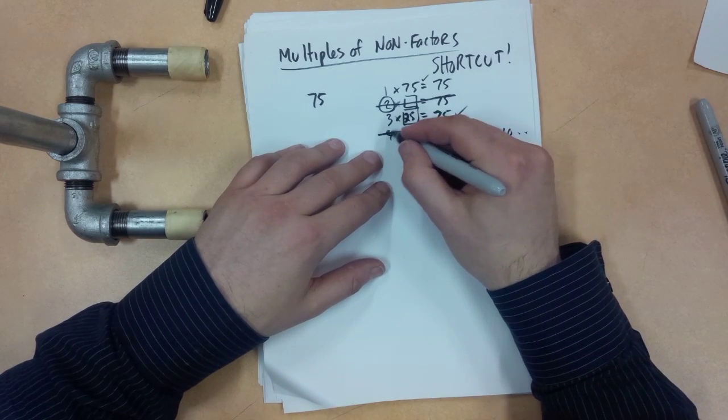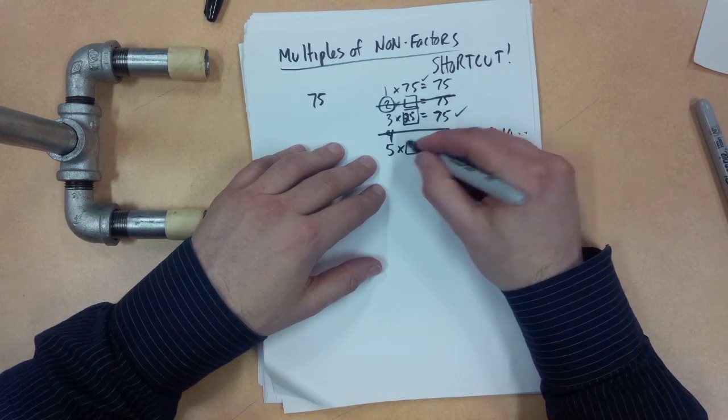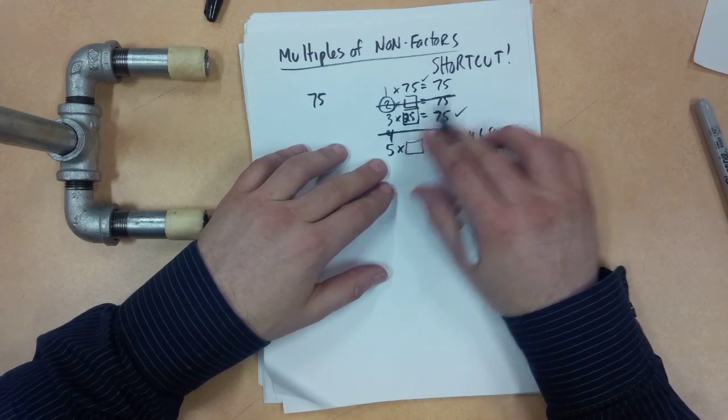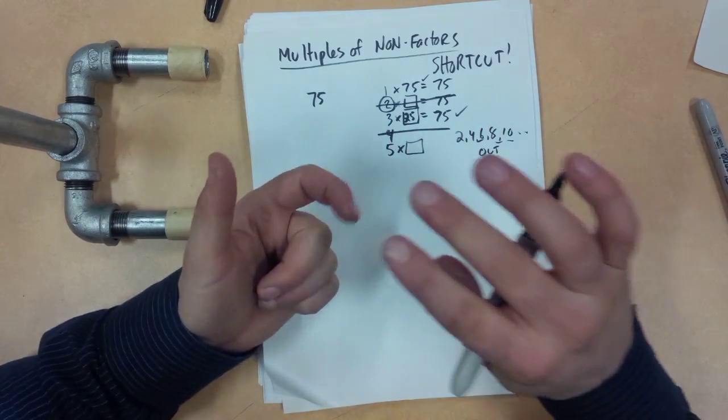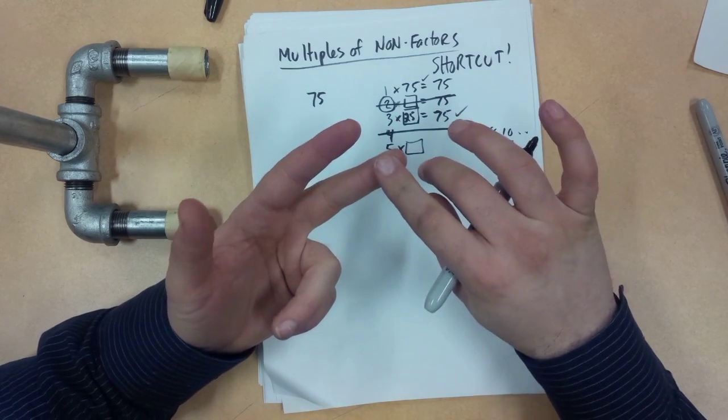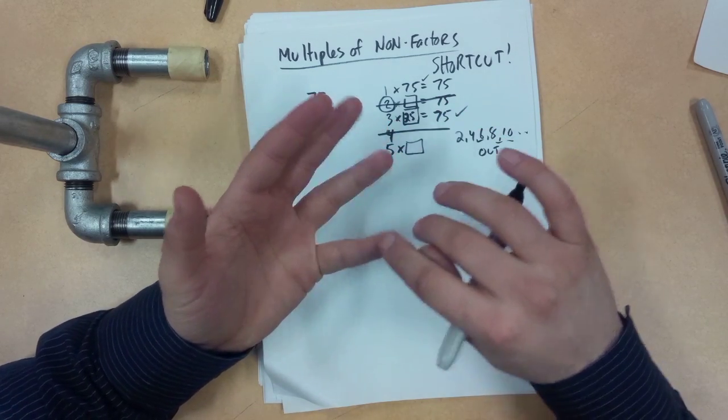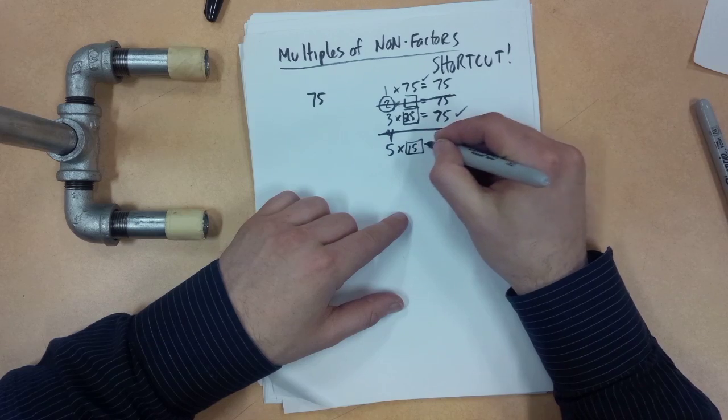We know 4 is out. What about 5? So we skip counting by 5 here. 5 times 10 is 50, 11 is 55, 12 is 60, 13 is 65, 14, 15 would be 75. No problem.